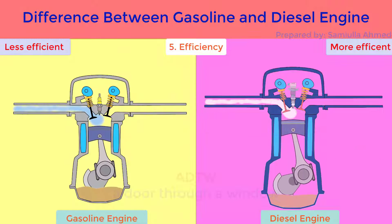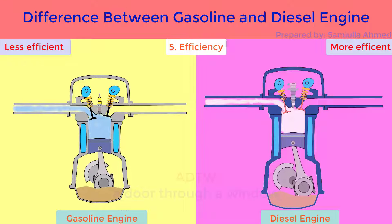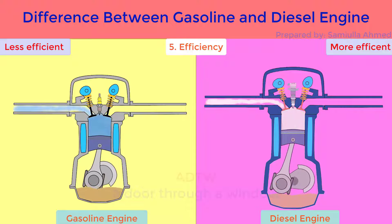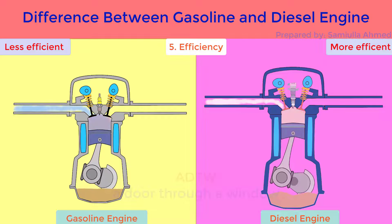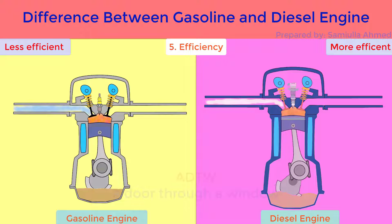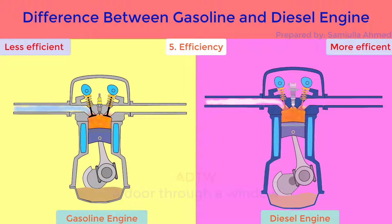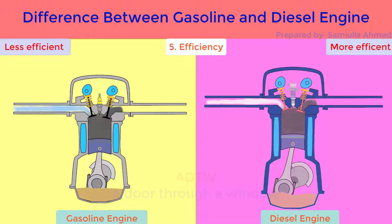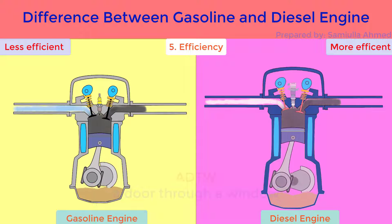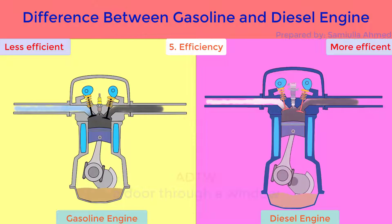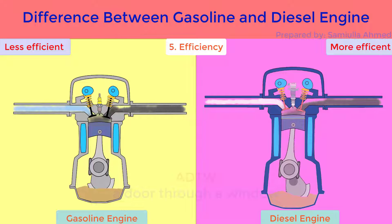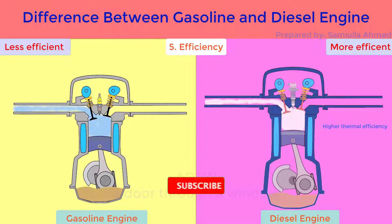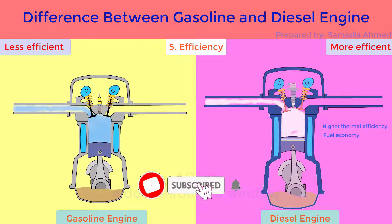Efficiency. Gasoline engines are less efficient due to lower compression ratios. On the other hand, diesel engines have higher efficiency due to higher compression ratios. In diesel engine, higher compression ratios lead to higher thermal efficiencies and better fuel economy.